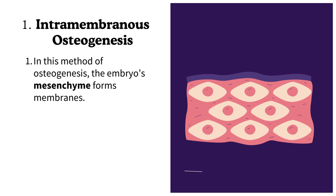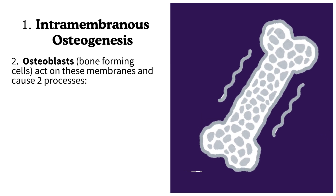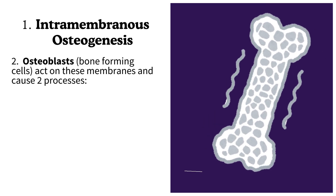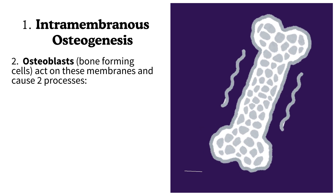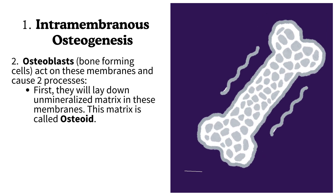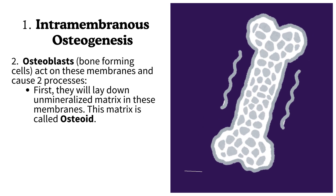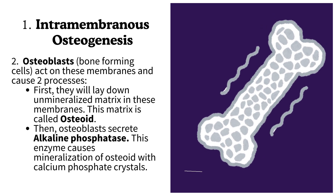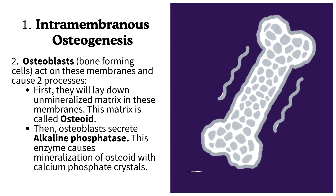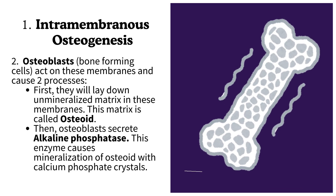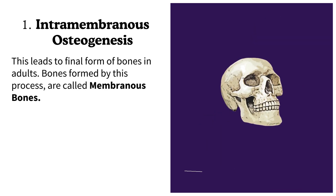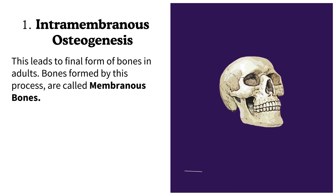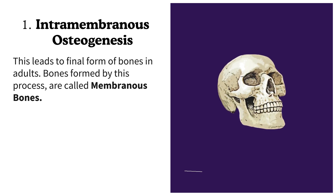In intramembranous osteogenesis, the embryo's mesenchyme forms membranes. Osteoblasts, also known as bone-forming cells, act on these membranes and cause two processes. First, they lay down unmineralized matrix in these membranes — this matrix is called osteoid. Then, osteoblasts secrete alkaline phosphatase, an enzyme that causes mineralization of osteoid with calcium phosphate crystals, leading to the final form of bones in adults. Bones formed by this process are called membranous bones.